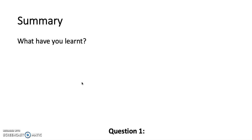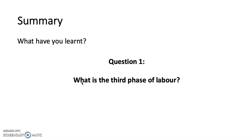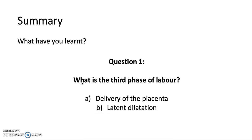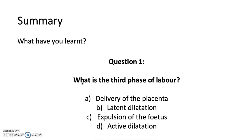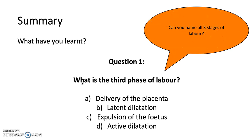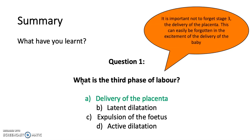In summary, question one: what is the third stage of labour? Is it A) delivery of the placenta, B) latent dilation, C) expulsion of the fetus, or D) active dilatation? The answer is A, delivery of the placenta. It's important not to forget stage three, as a lot of the complications of labour occur because this third stage isn't managed appropriately and there are difficulties delivering the placenta.